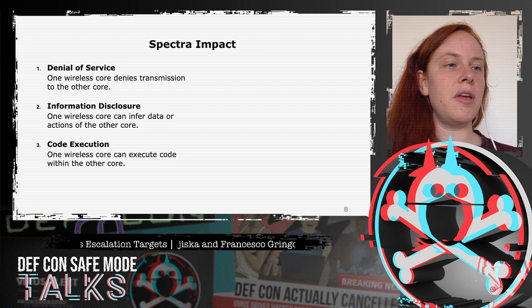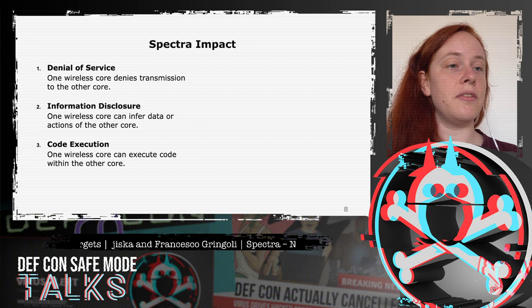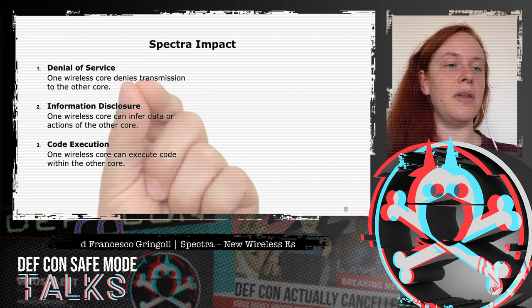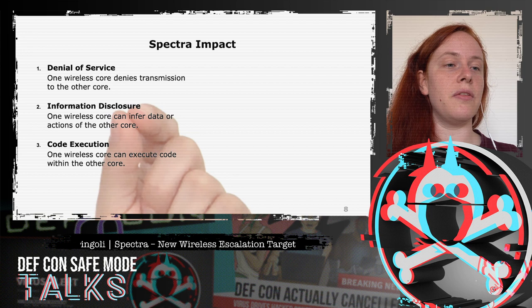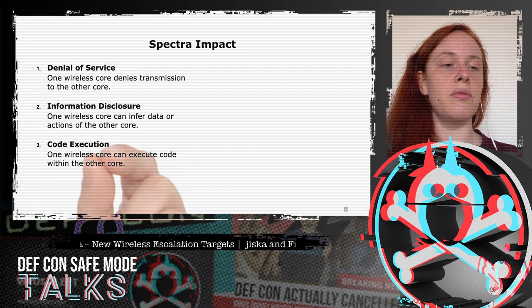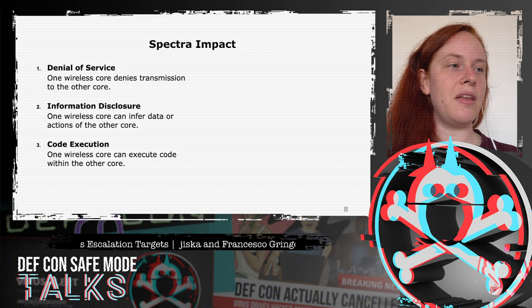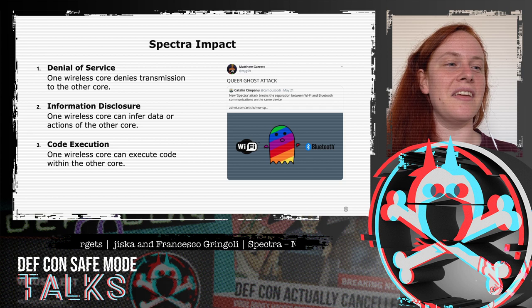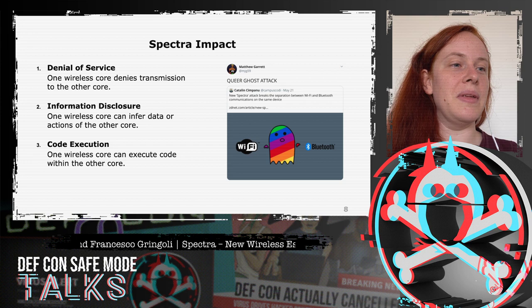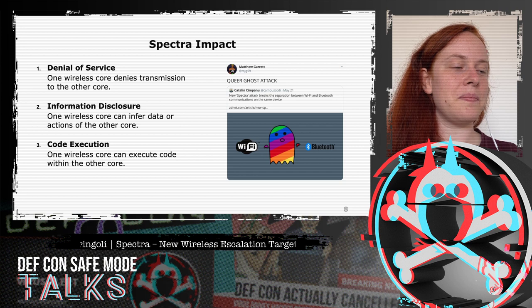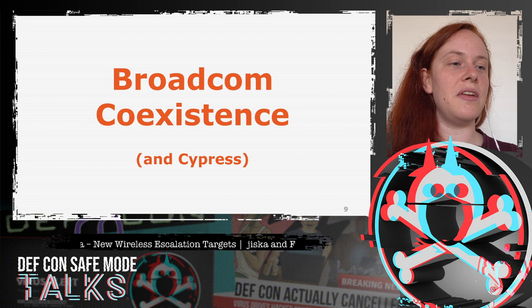The Spectra impact varies depending on how the coexistence interface is implemented. The most obvious impact is denial of service if one core denies transmission to another. It could also be information disclosure via timings or packet types, and worst case, code execution — for that you really need to screw up your implementation. When the attack first appeared online via the Black Hat abstract, people started giving it other names; 'Spectra' is the original name though it's harder to find online because it's a generic word.